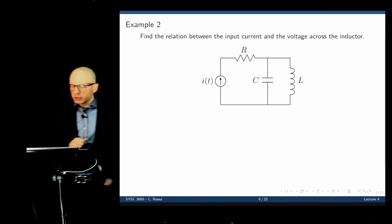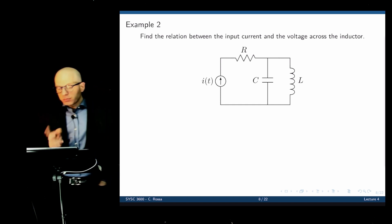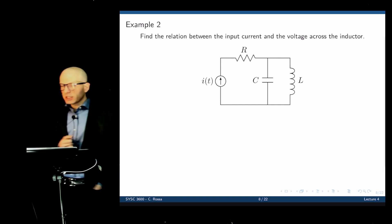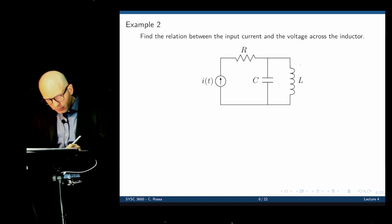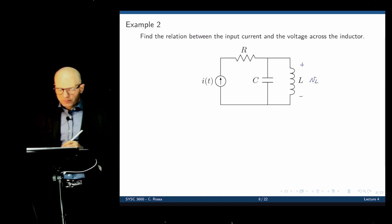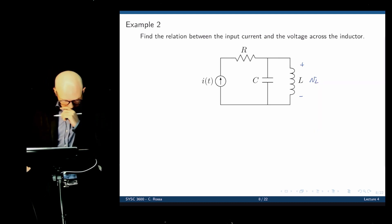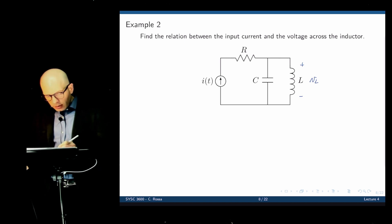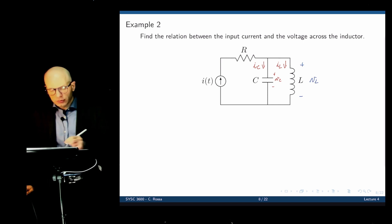Here is a second example: find the relation between the input current and the voltage across the inductor. Now the input to the system is a current rather than a voltage. Let IC be the current through the capacitor and IL be the current through the inductor. VC is the voltage across the capacitor and VL is the voltage across the inductor.